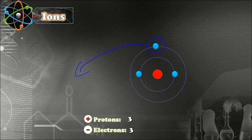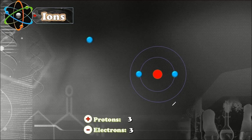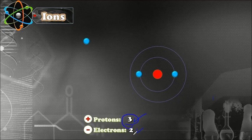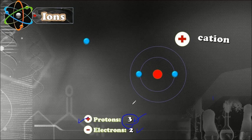It is easier for lithium to lose this one electron to another atom in ionic bonding. Now we look: we have three protons and two electrons. Three is bigger than two, and the charge of the proton is positive, so this atom is now going to have a positive charge.